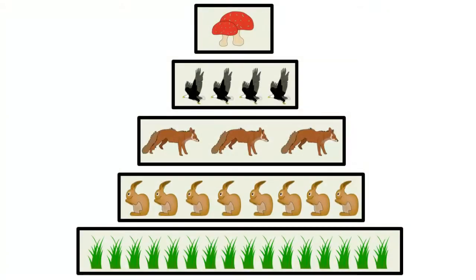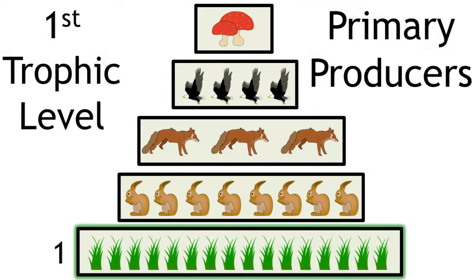Now let's look at the trophic levels in this community. The first trophic level is the primary producers, the grass.